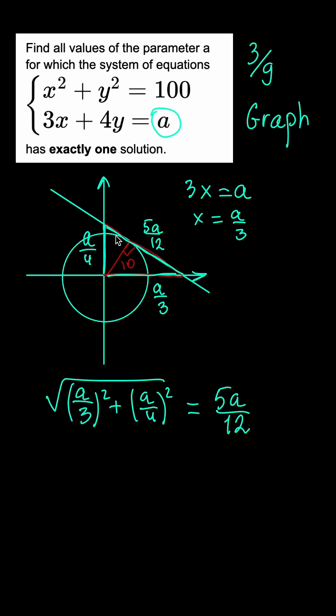To find the value of a, we set up two expressions for the area of this triangle. So we have 1 half times a over 4 times a over 3. And on the other hand, we have 1 half times 5a over 12 times 10. And if we carefully solve this simple equation, we get a equals 50,